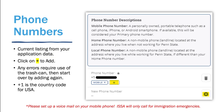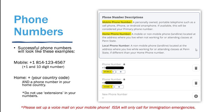We will start with the phone number updates. ESA asks for all students to list both a home phone number or non-US number, which can be a parent or relative's number. ESA also requires a local phone number — typically a mobile number. You will enter your phone numbers and then tag the number with the proper label prior to saving.